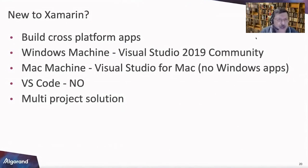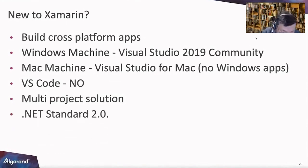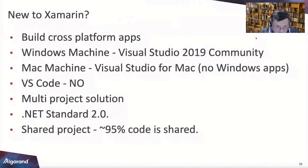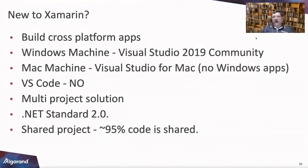You end up with a multiple-project solution. You have a head project which is .NET Standard 2.0 — shareable amongst all other projects in the solution — namely one for iOS, one for Android, and one for Windows. This facilitates roughly 95% shared code; you only code once and you're building a cross-platform solution. The sample I'm showing is closer to 99% — there are only a couple of lines in each that kick off the application.